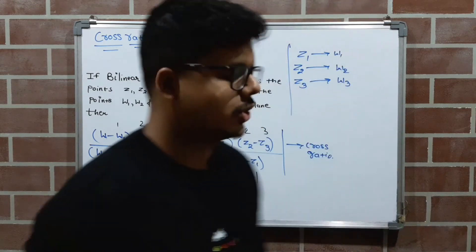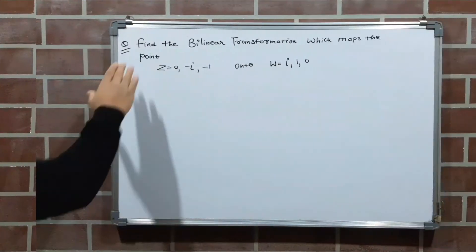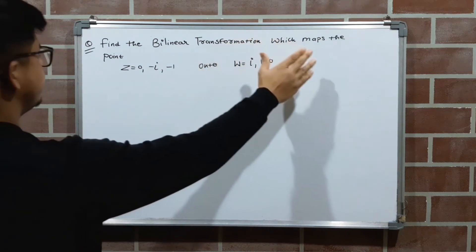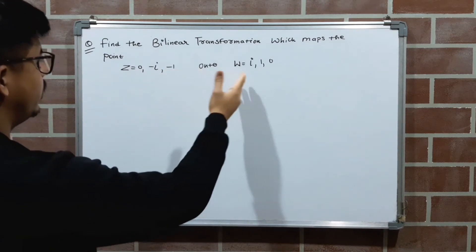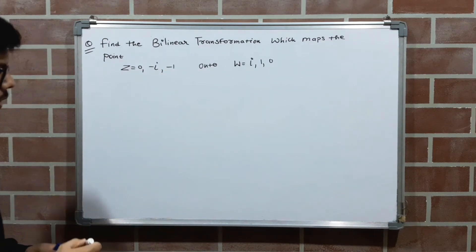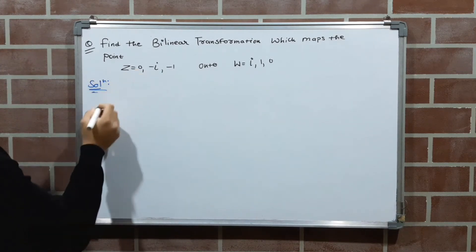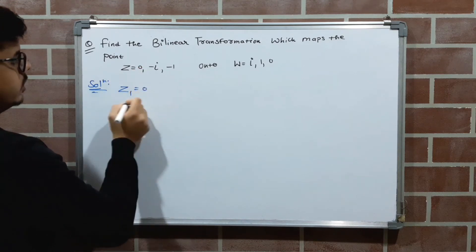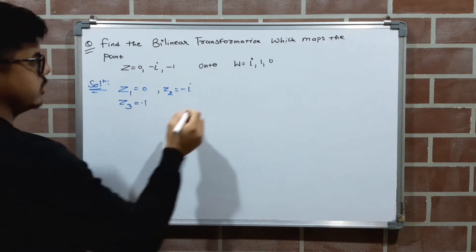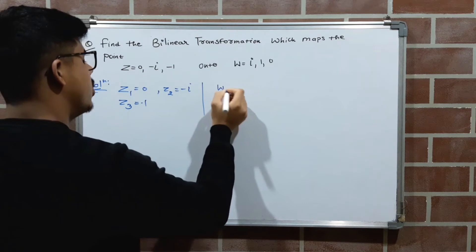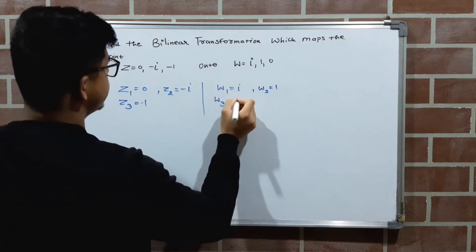Now we will solve a sum related to the cross ratio. The question is: find the bilinear transformation which maps the points Z = 0, −i, −1 onto W = i, 1, 0. In the solution, we identify Z1 = 0, Z2 = −i, Z3 = −1, and correspondingly W1 = i, W2 = 1, W3 = 0.